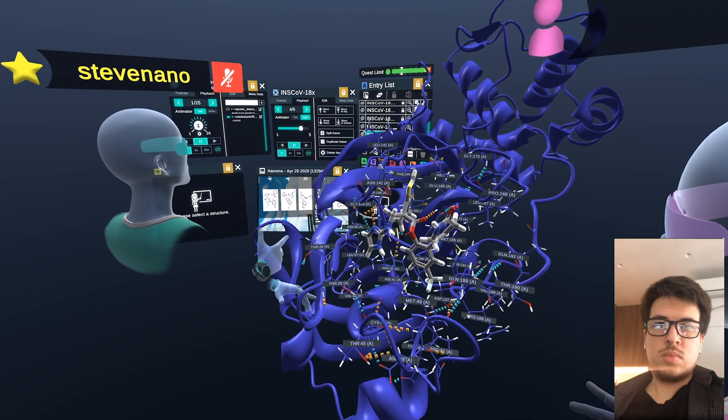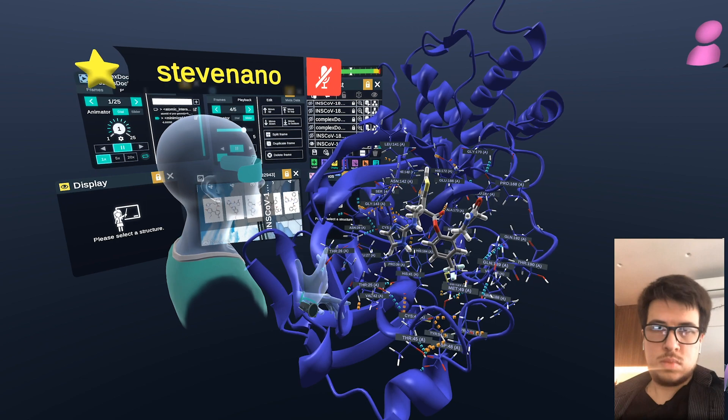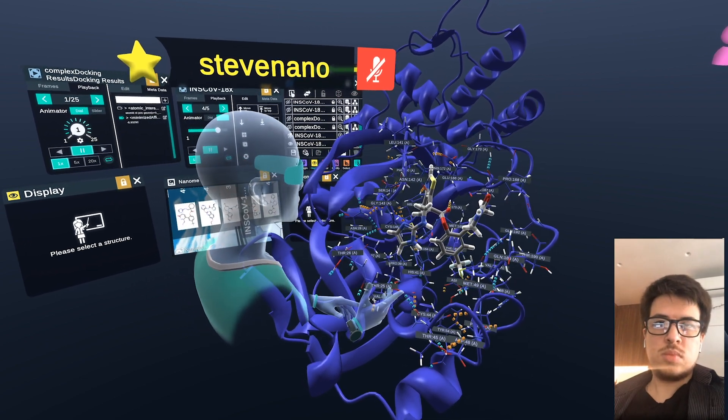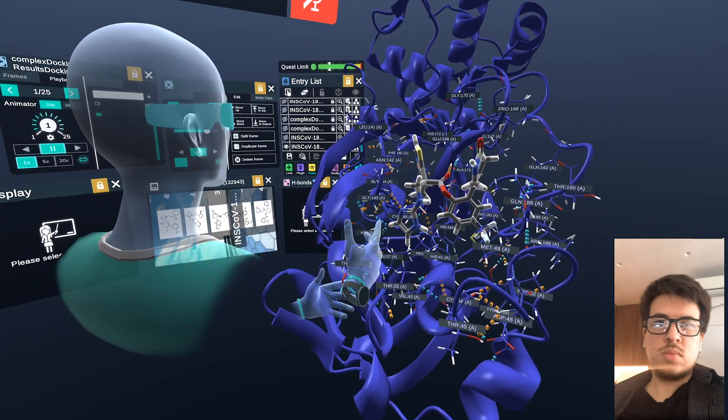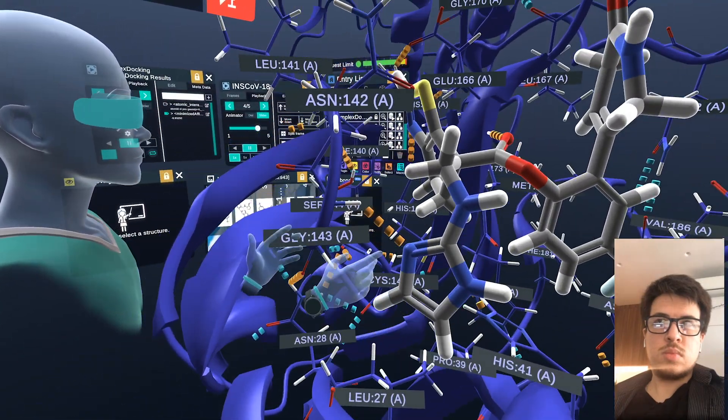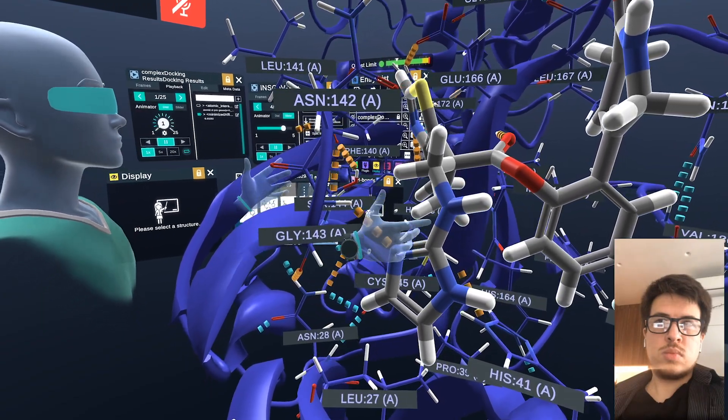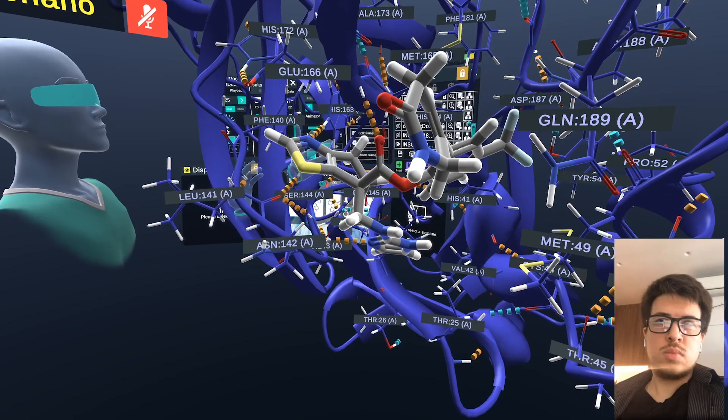You know, these five molecules are just such beautiful fits into the pocket. Steve, do you want to walk us around the molecule a little bit and show us some of the interactions that pop up? Yeah, definitely. So with this one in particular, we can see that there's some weak hydrogen bonds forming here, a little bit on this histidine 163.